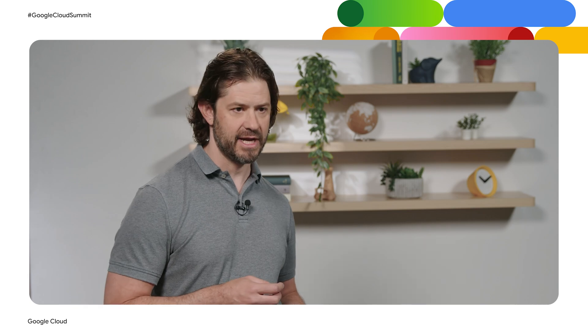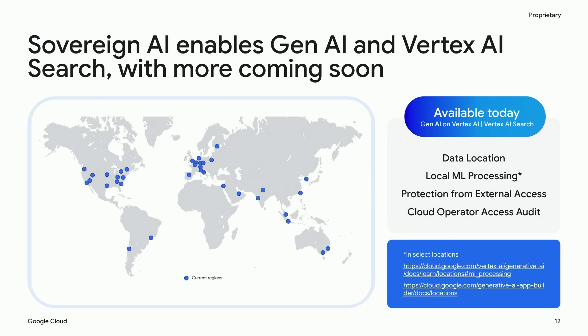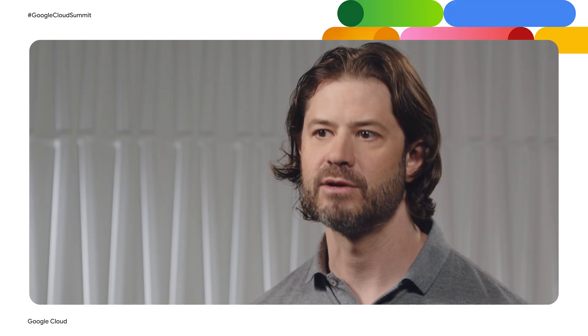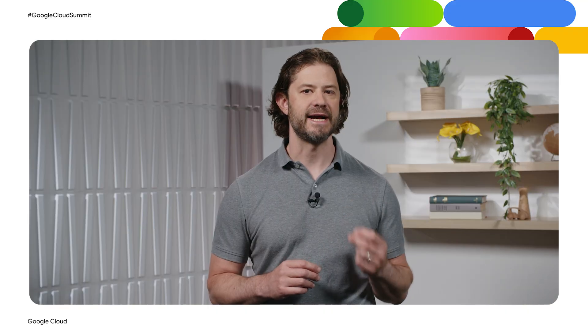As our customers are looking to use Google's AI services and infrastructure, we are highly focused on providing sovereign AI. We believe that customers shouldn't have to choose between leveraging cutting-edge AI and meeting their sovereignty requirements. Today, we already enable generative AI on Vertex AI and Vertex AI Search within our data boundaries, ensuring data location and local ML processing in select locations and for select regulatory regimes. We are continuing to expand to bring the full power of Google's AI to our customers in a way that provides unparalleled control and trust. A great example of this delivering real-world value is Regnology, a leading financial services software provider. Let's hear more from Antoine Moreau, the CIO for Regnology.